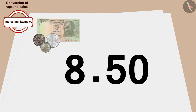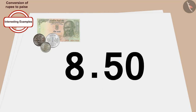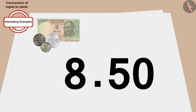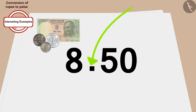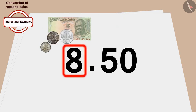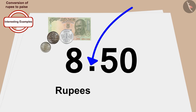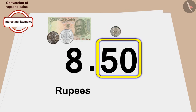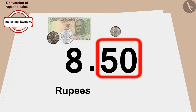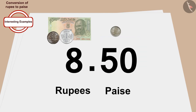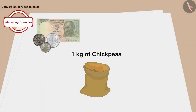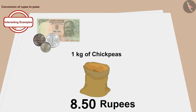Children, do you know that we write the price of any item in this way as well? The number written to the left of the dot is in rupees and the number written to the right of the dot is in paise. In this way, the price of 1 kg of chickpeas is 8 rupees 50 paise.